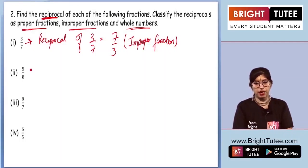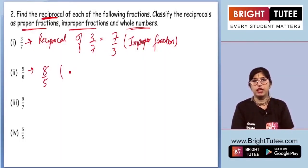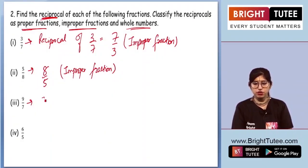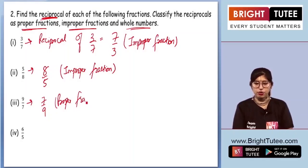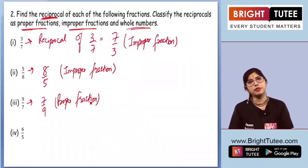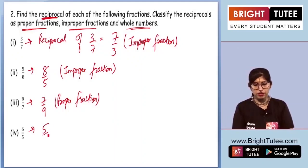Moving to the second part: the reciprocal of 5 by 8 is 8 by 5, which is again an improper fraction. For 9 by 7, the reciprocal is 7 by 9, which is a proper fraction. So what we understand is: if the question is a proper fraction, we get an improper fraction as the reciprocal, and vice versa. So 6 by 5 turns to 5 by 6, which is a proper fraction.